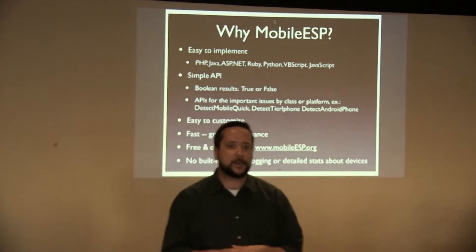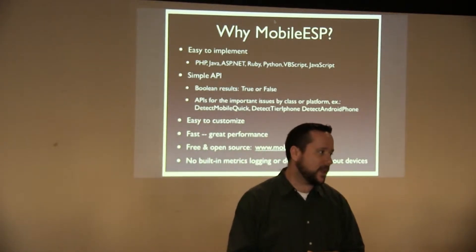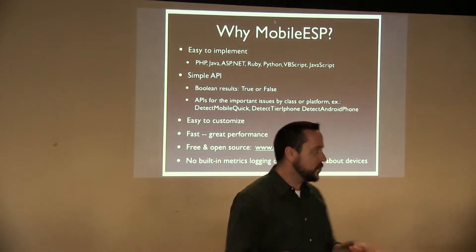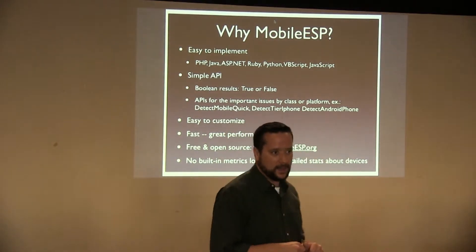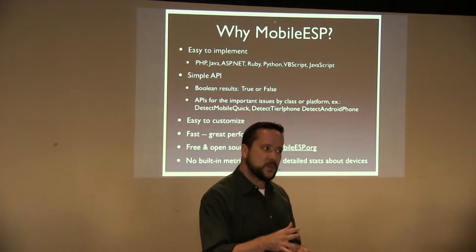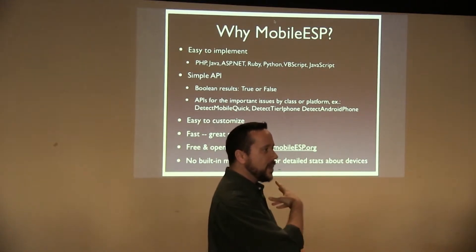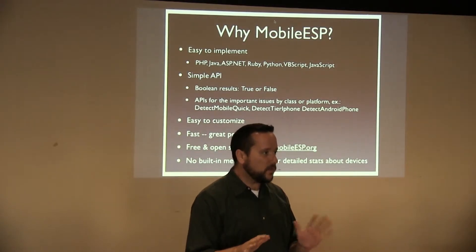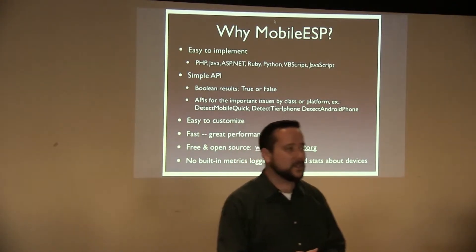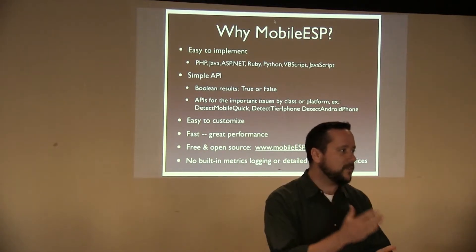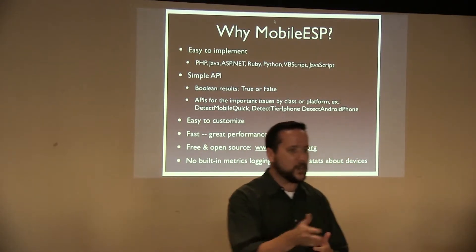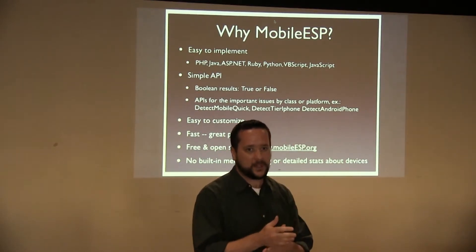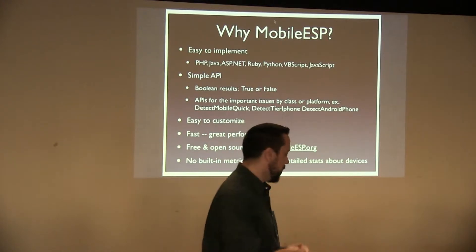What's also cool about Mobile ESP is that there's a very simple API, and that's what I wanted for myself — I just want to know, is it a mobile phone or not? So that's like a detect-mobile quick method. But sometimes you might want a little more granularity, so the API has a bunch of functions built in for thoughtful types of questions, like: is it an iPhone-tier phone device — like iPhone, Android, or WebOS? Or is it a tablet or a game console? And just get a quick yes or no.